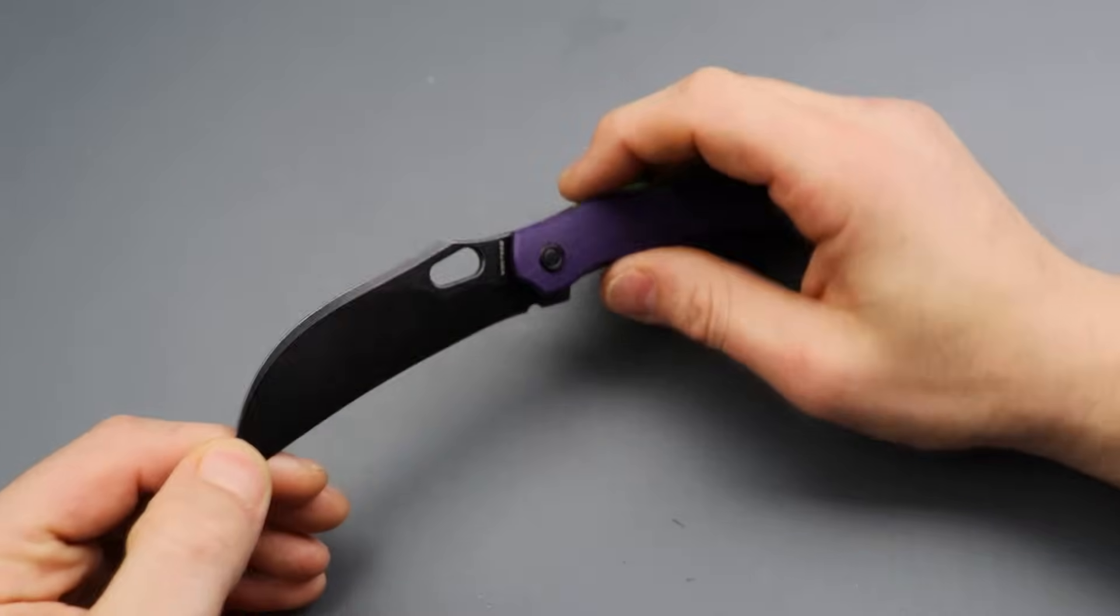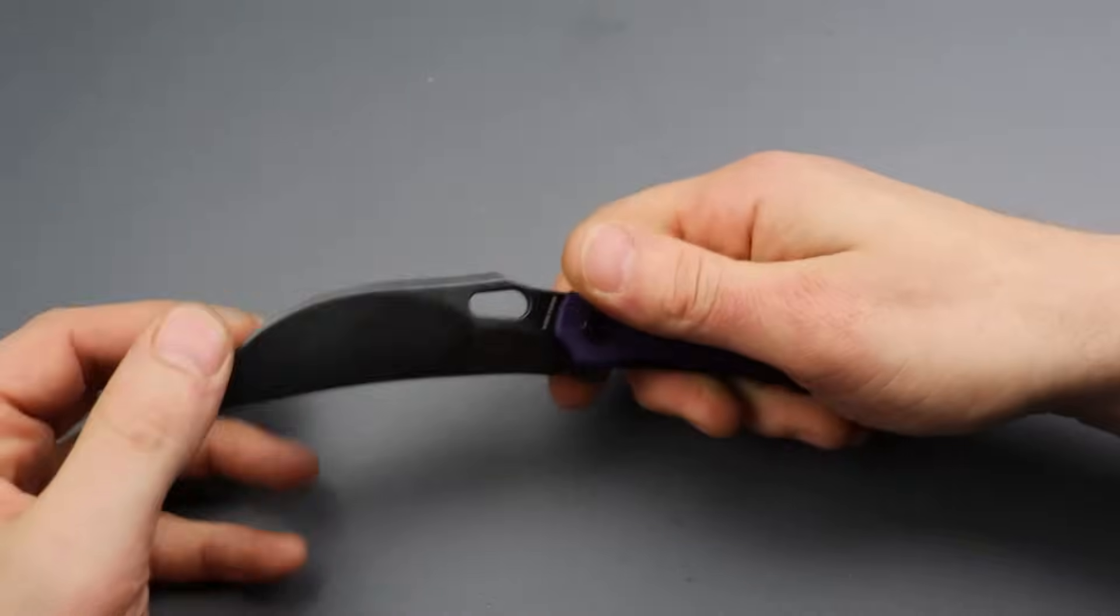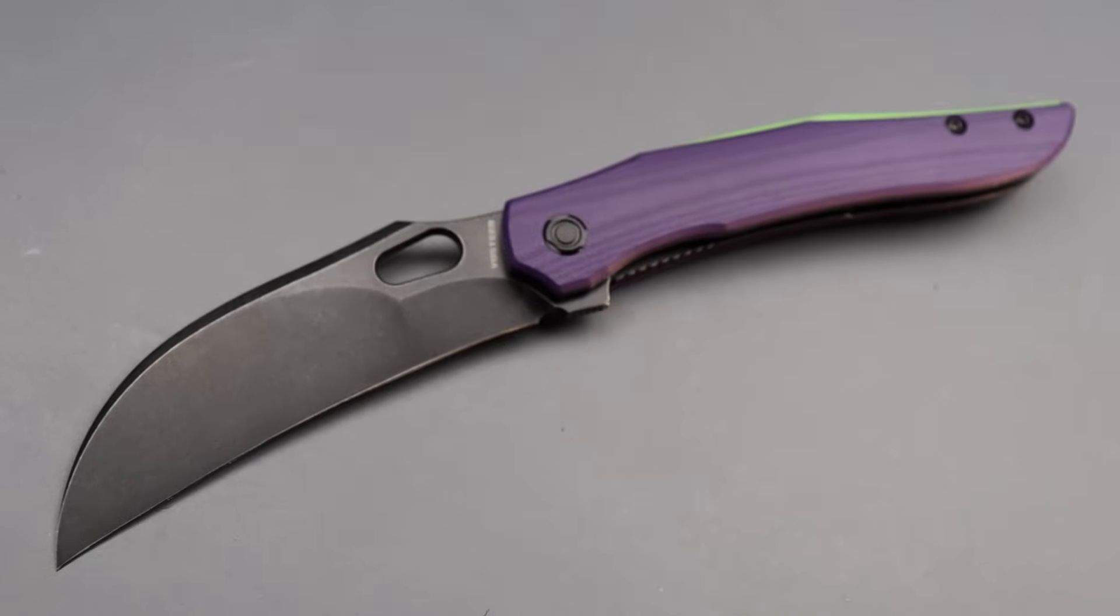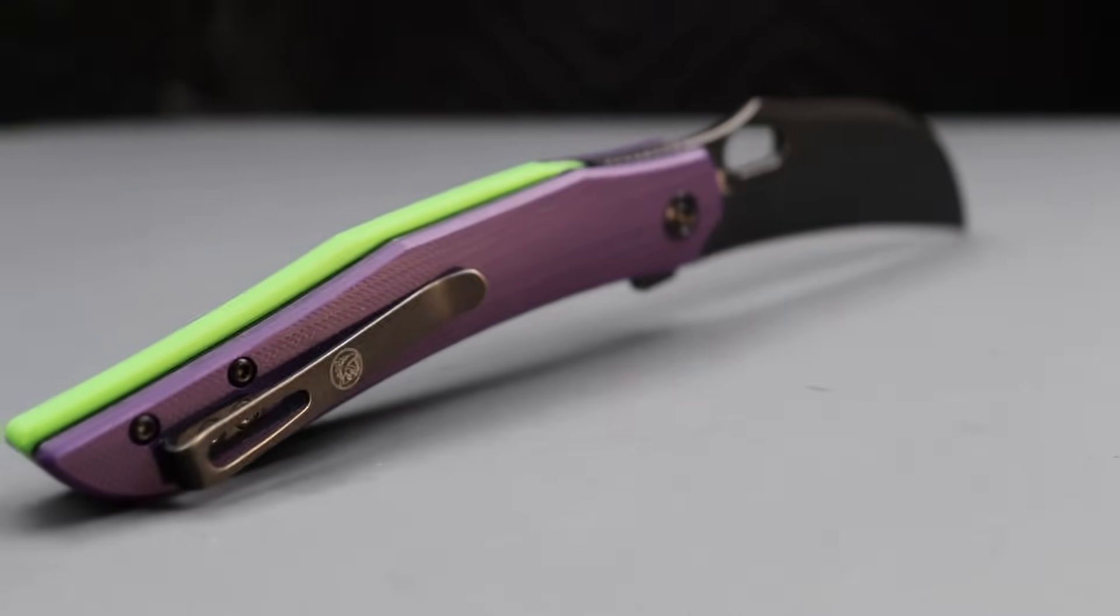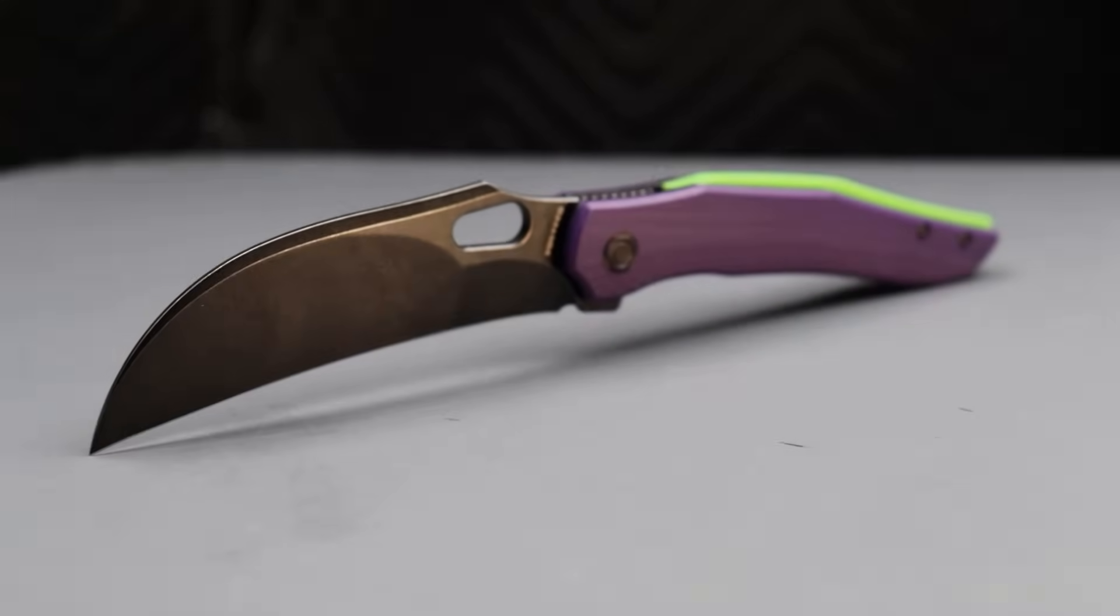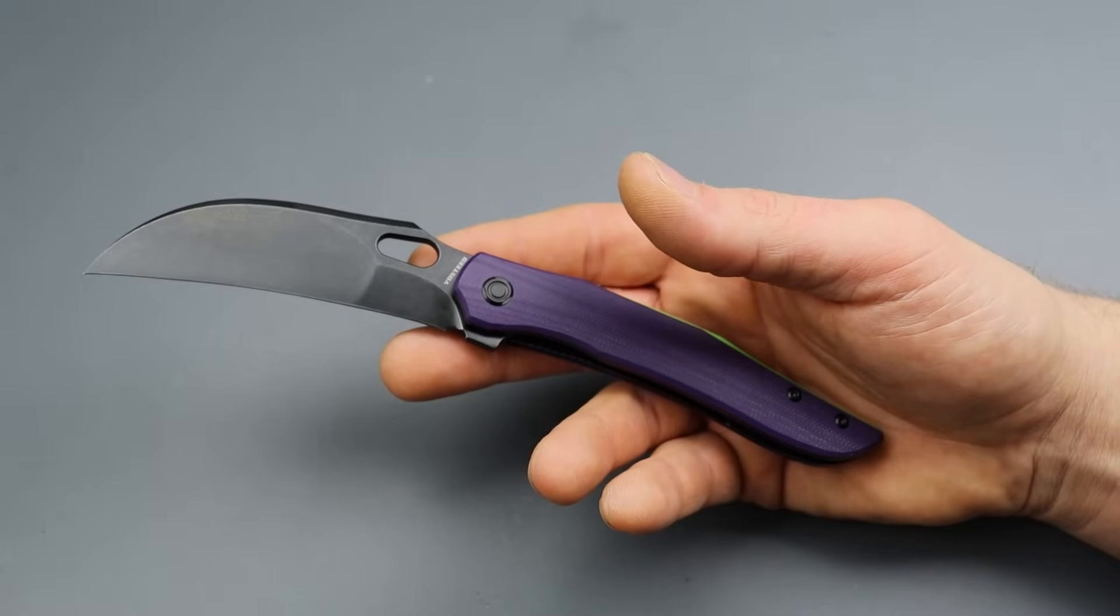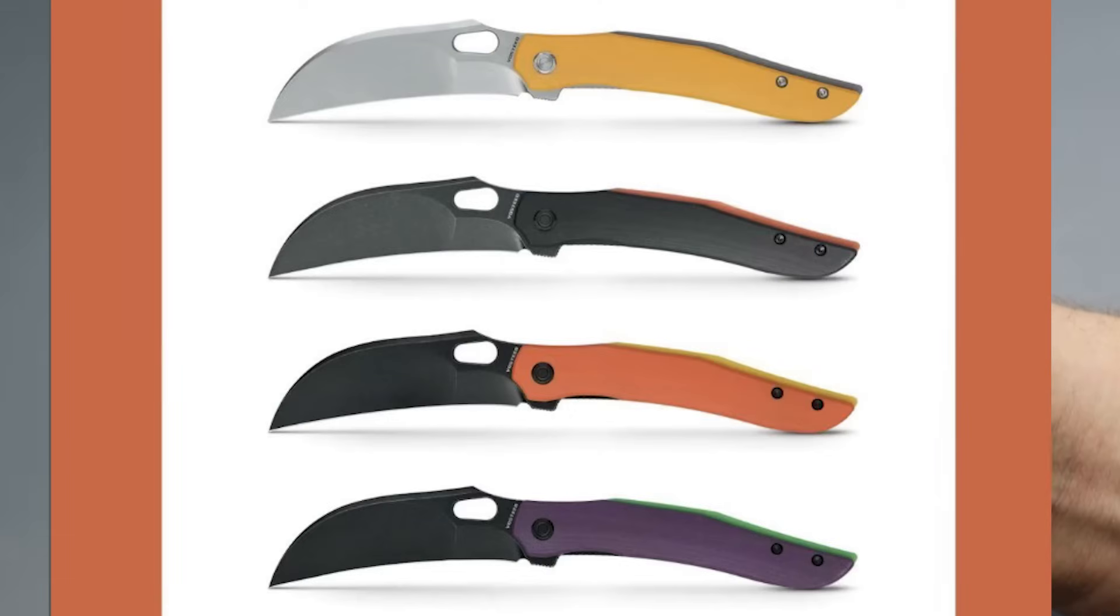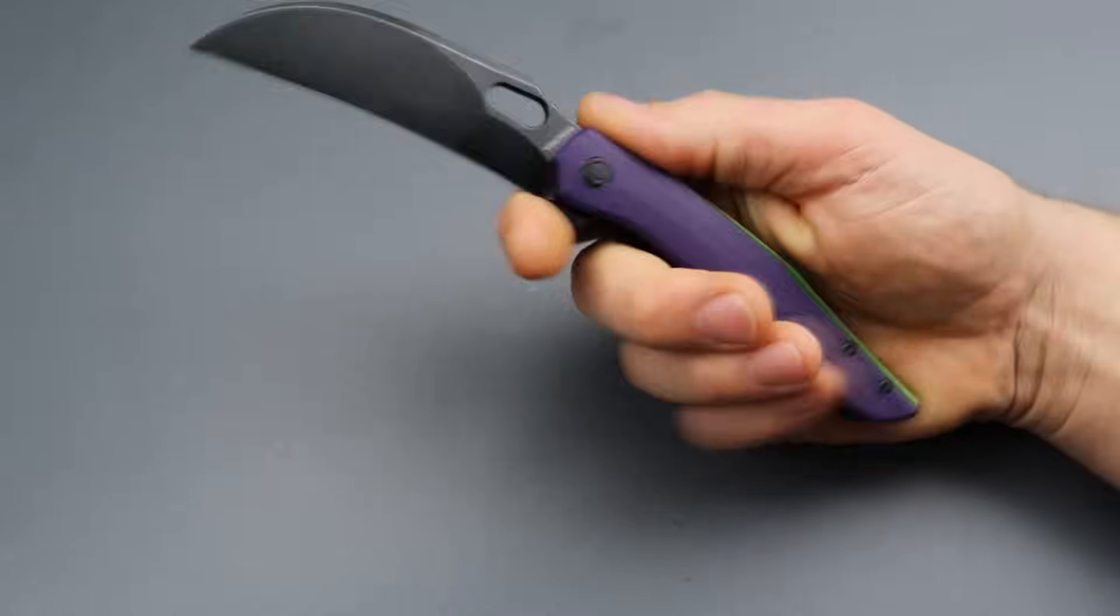We got some new knives from Vosteed, starting it off with the new Vosteed Griffin. Right off the bat, either you're going to like these colors or not. There are other color options. I'm not the biggest fan of super colorful - I do like a pop of color - but there's also some black ones. There's a yellow one, and then obviously this one, which is like the Joker edition or something, which I think already sold out, which is crazy. I'll do what I can to link what I can down in the description.